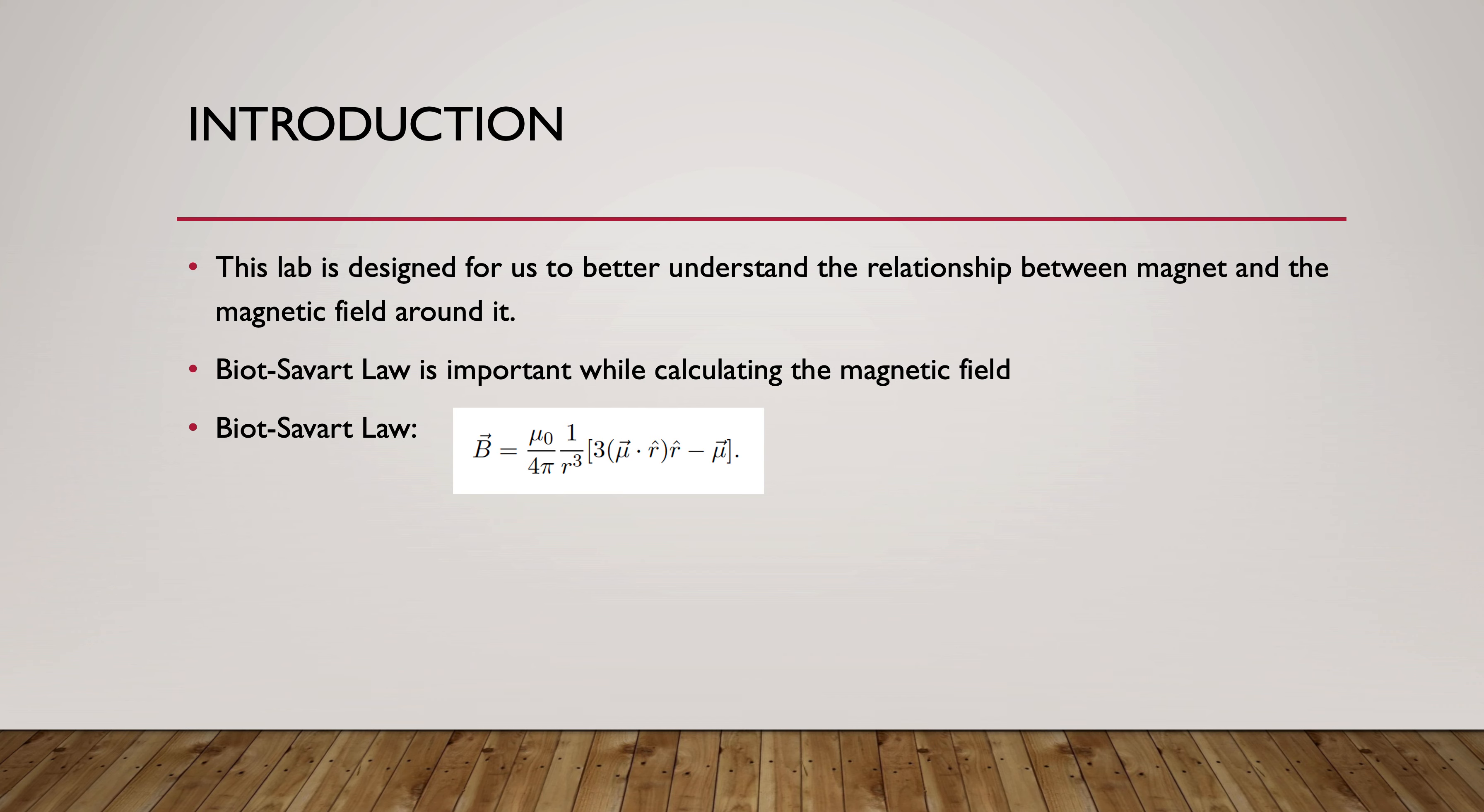What we use here is the Biot-Savart law, and it's very important for calculating the magnetic field. The equation reads as follows: B equals μ₀ divided by 4π times 1 divided by r³, times 3μ times r̂ times r̂ minus μ.